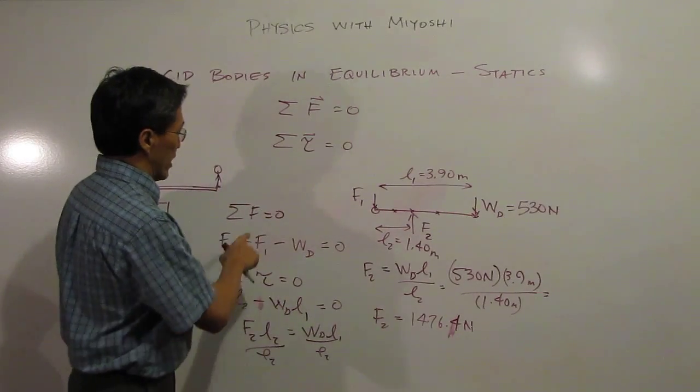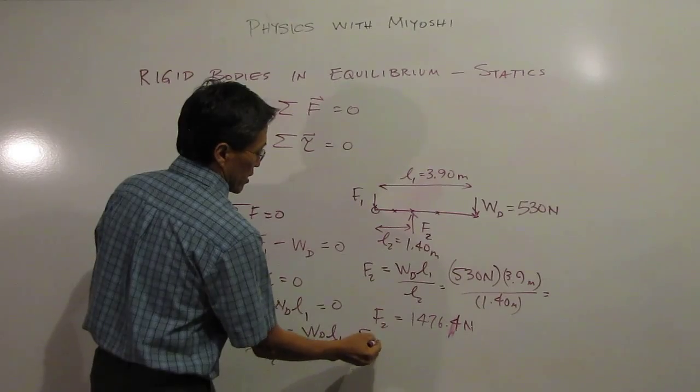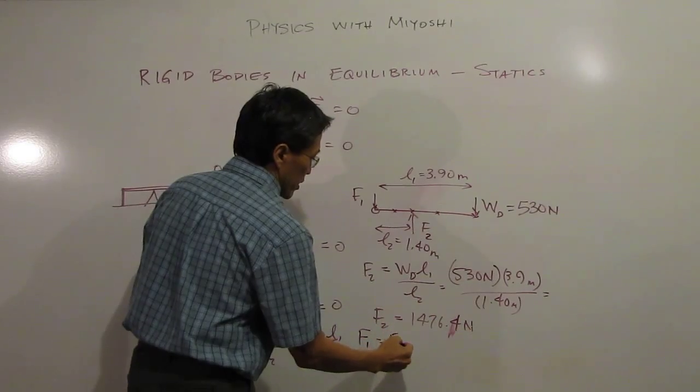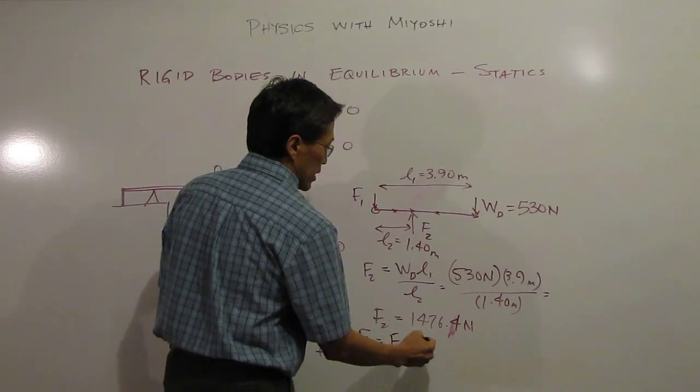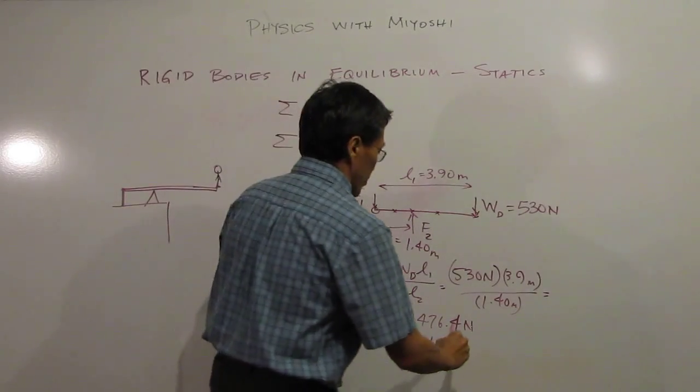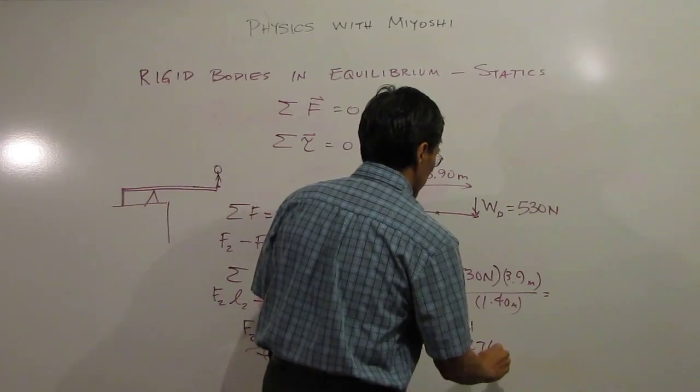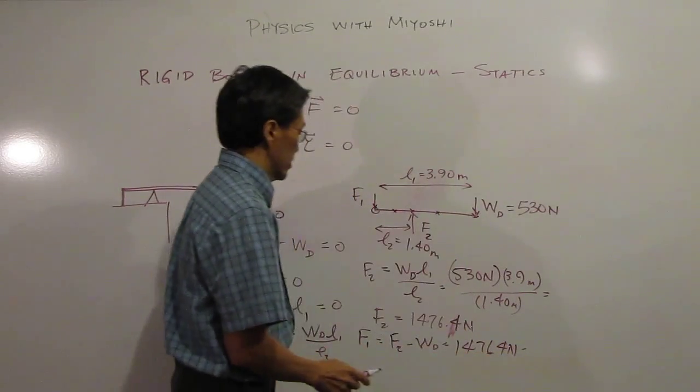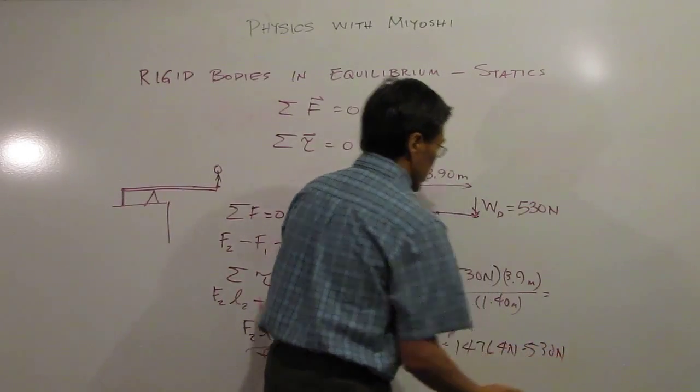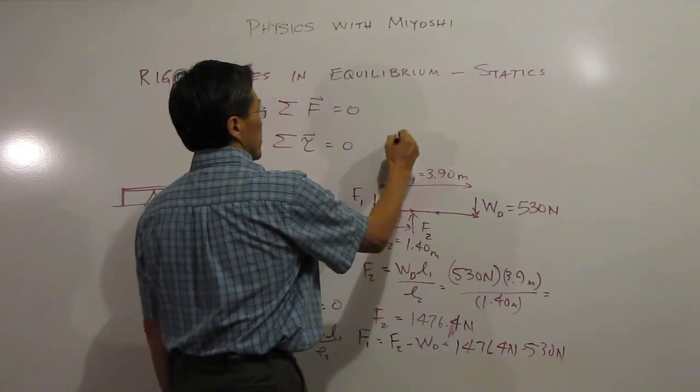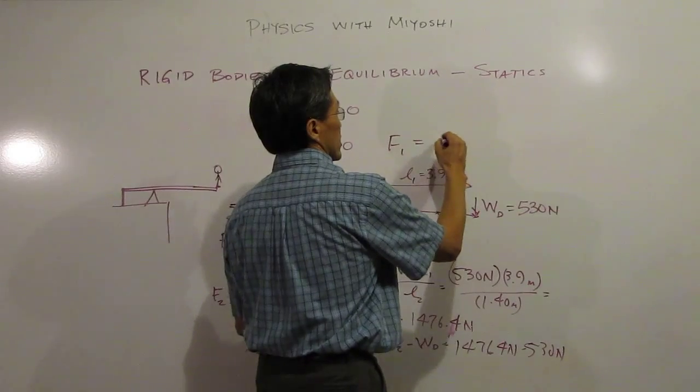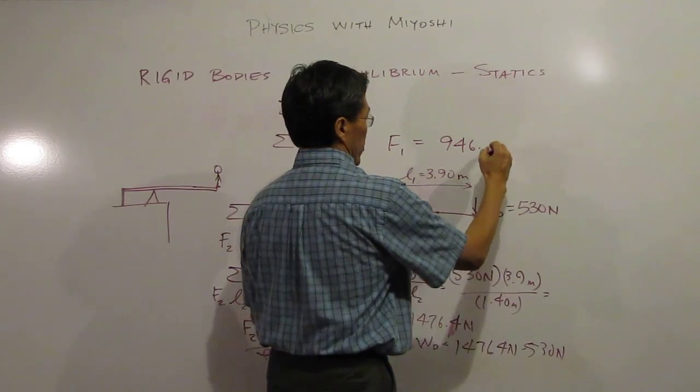If we look at our units, our meters cancel out. And so we're left with newtons there. Now we can just plug that guy back into this equation right here. And then we can find F1. So F1 then would be F2 minus WD. So F2 is 1476.4 newtons minus our WD is 530 newtons. So our F1 then ends up being 946.4 newtons.